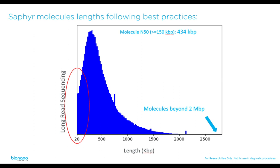Here's a histogram of molecule lengths coming off the SAFIRE instrument from a particularly good run. This has a molecule M50 — a center of mass — of 434 KB, or 434,000 base pairs. Long-read sequencing approaches typically achieve 20–30 KB N50 lengths. Our center of mass is typically much higher — anywhere from 250 KB and up is typical. Some molecules in the distribution go past a megabase, even past two megabases in length. What's most informative for our downstream assembly process is where the center of your dataset resides in terms of length.